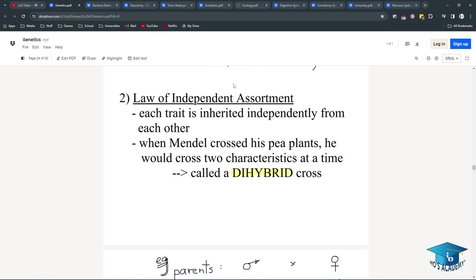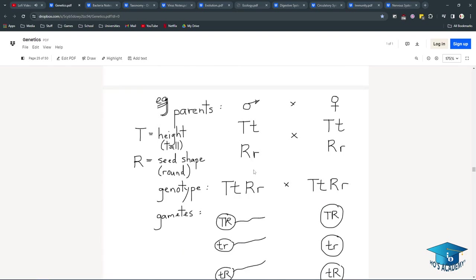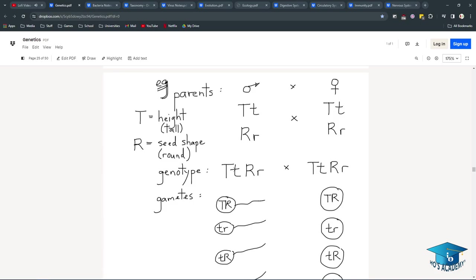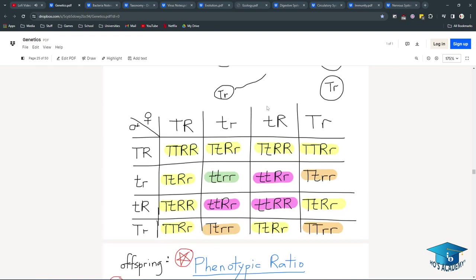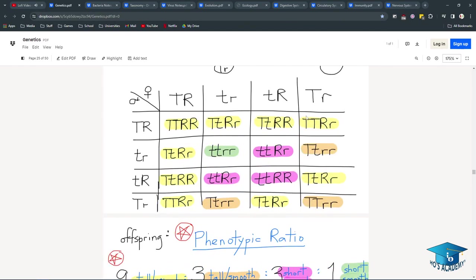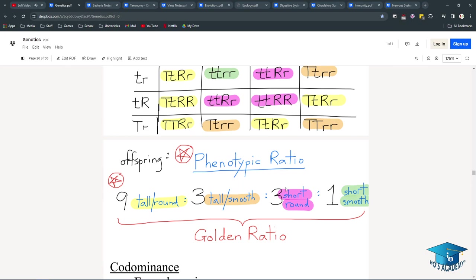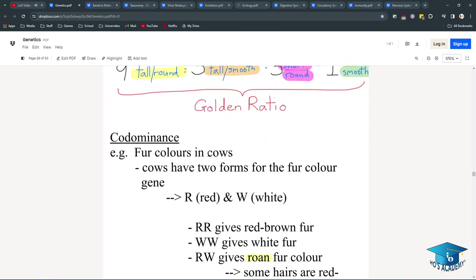The law of independent assortment is that each trait is inherited independently from each other, which I think is also untrue later on. But, when Mendel crosses pea plants, he would notice he would cross two characteristics at a time, and this was called a dihybrid cross. The 4x4 hellish cross. So, you can use FOIL to figure out the genotypes and which gametes you need to cross, but you will get this massive 4x4. If you're crossing completely heterozygous for everything, there's a golden ratio of 9 to 3 to 3 to 1 in this shape, and I think it's worth remembering because it'll save some time if they ask about it in a paper 1.